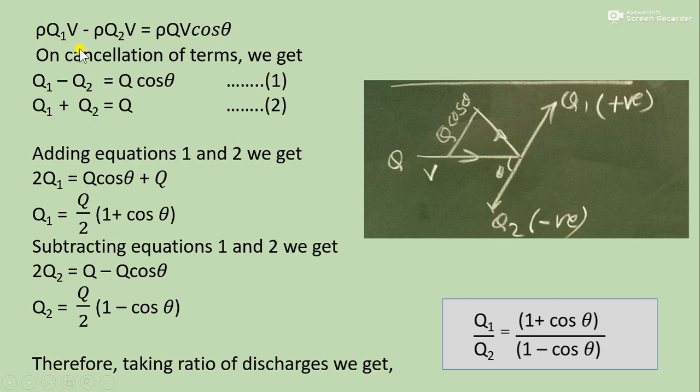By cancellation of terms, ρV are the common terms. So Q1 minus Q2 equals Q cos θ. That is equation number 1. And equation number 2 we already know, that is summation of two discharges Q.